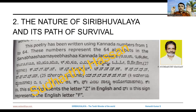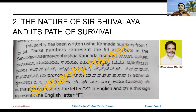There are 9 basic Swaras: A, E, U, R, L, A, I, O, O. Each one has Hrasva, Dirga, and Pluta forms. So 9 Hrasva Swaras also have their counterparts Dirga and Pluta, giving you 27 Swaras.